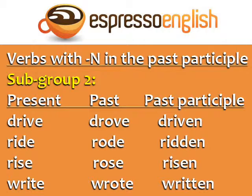Subgroup two has O in the past but not in the past participle. Drive — drove — driven. Ride — rode — ridden. Rise — rose — risen. Write — wrote — written. Notice that the sound of the I changes from the present to the past participle. The present is 'drive' and the past participle is not 'drivin'' but 'driven.'